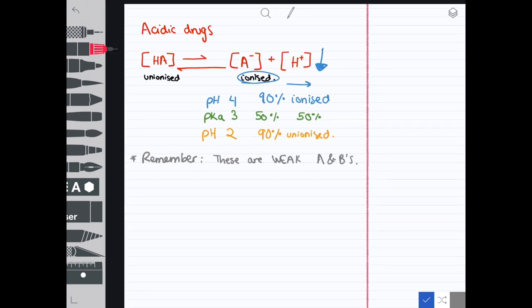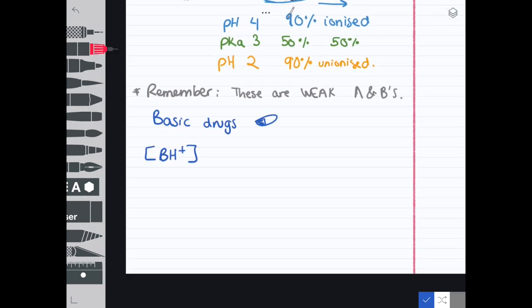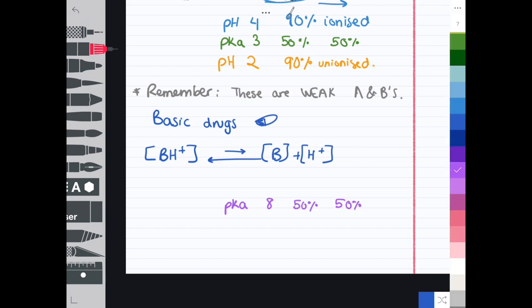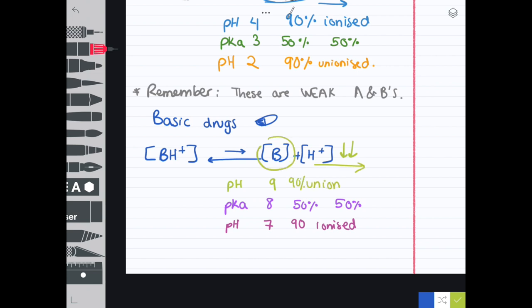Now let's take a basic drug. We use the basic drug equilibrium equation. Let's say the pKa is 8, where it's 50% ionized and 50% unionized. Below the pKa at pH 7, you're increasing the hydrogen ions, which shifts the equation to the left where you get the ionized form. If you increase the pH, you are decreasing the hydrogen ions, which shifts the equilibrium to the other side and you get more of the unionized form.